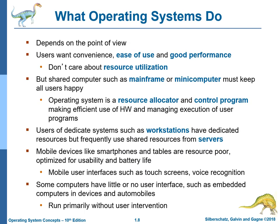What do operating systems do? It depends on the point of view. Users want convenience, ease of use, and good performance — we don't care about resource utilization. But shared computers, such as mainframe or minicomputer, must keep all users happy. The operating system is a resource allocator and control program, making efficient use of hardware and managing execution of user programs. Users of dedicated systems, such as workstations, have dedicated resources but frequently use shared resources from servers. Mobile devices like smartphones and tablets are resource poor, optimized for usability and battery life, with mobile user interfaces such as touchscreens and voice recognition. Some computers have little or no user interface, such as embedded computers in devices and automobiles, and run primarily without user intervention.